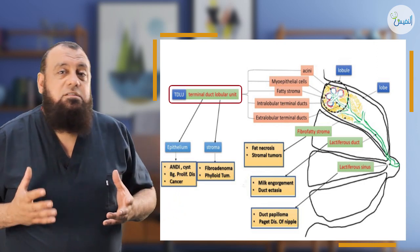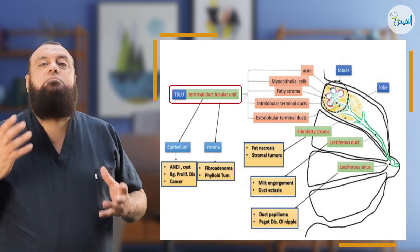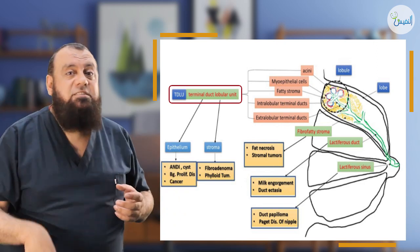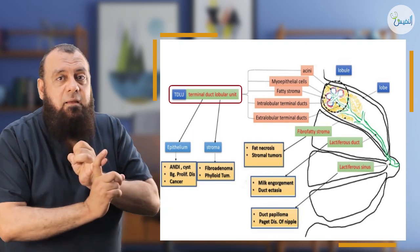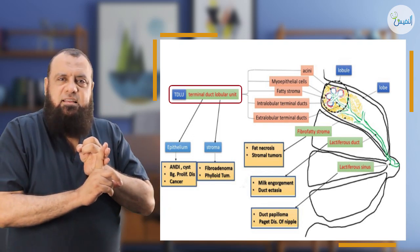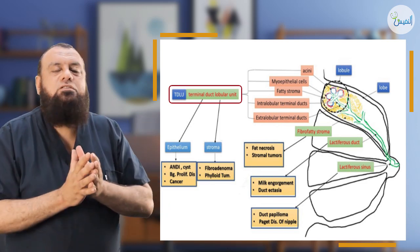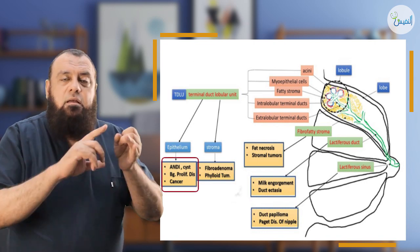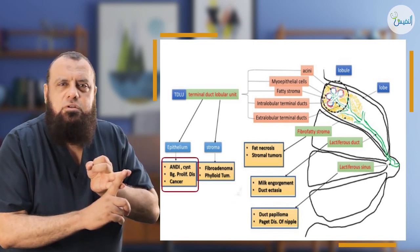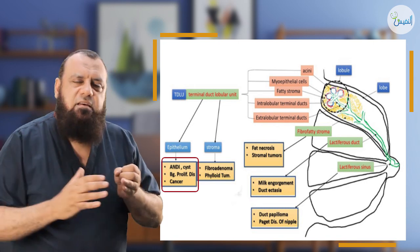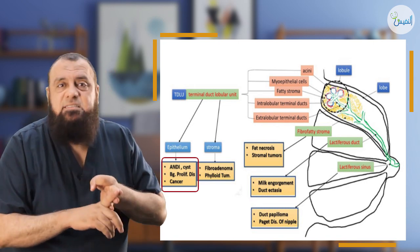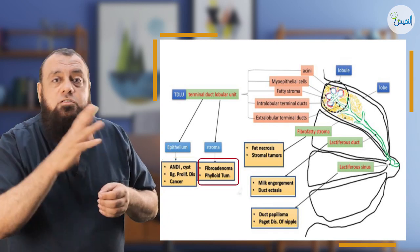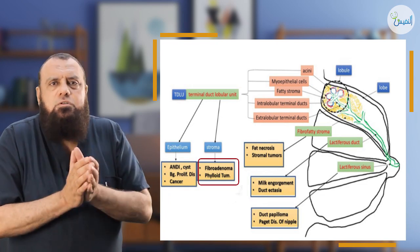It is very important to know what we call the terminal duct lobular unit (TDLU). This is the lobule containing the acini and the terminal ducts — the ductules, intralobular ducts, and extralobular ducts — with the surrounding stroma. This unit is under control of the estrogen hormone, and is responsible for most breast disease. Most breast disease arises from this unit. From the acini and surrounding small ducts, ANDI can occur. Proliferative breast disorders can occur — we will discuss these later. Cancer can also occur from this unit. From the surrounding stroma, fibroadenoma and phylloid tumor can occur. So it is very important to know the terminal duct lobular unit.